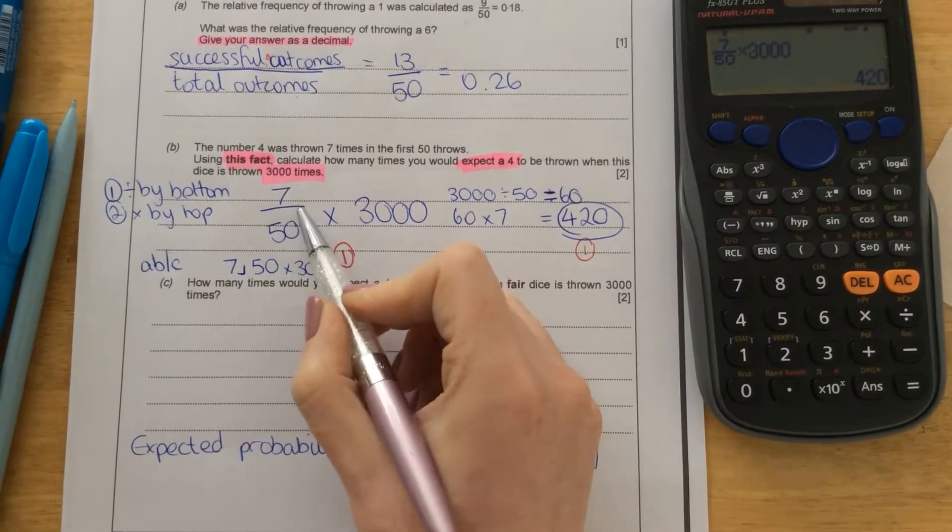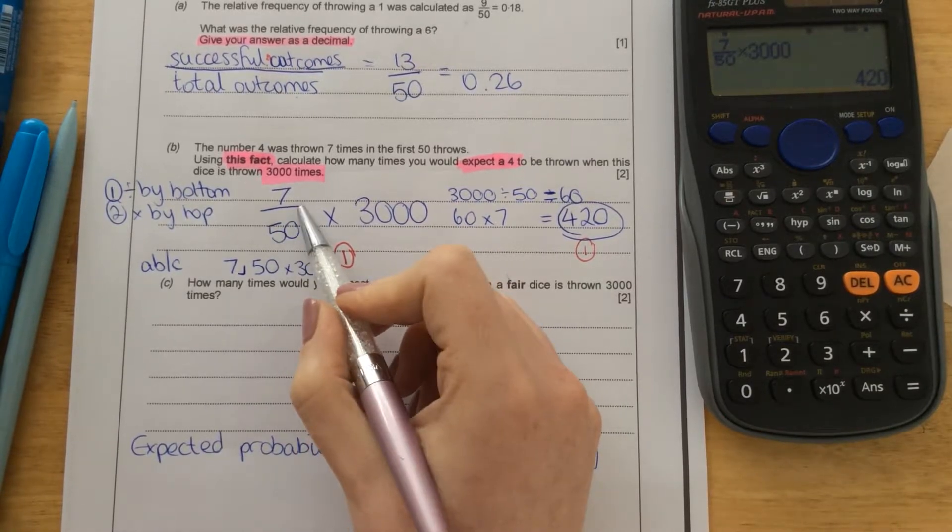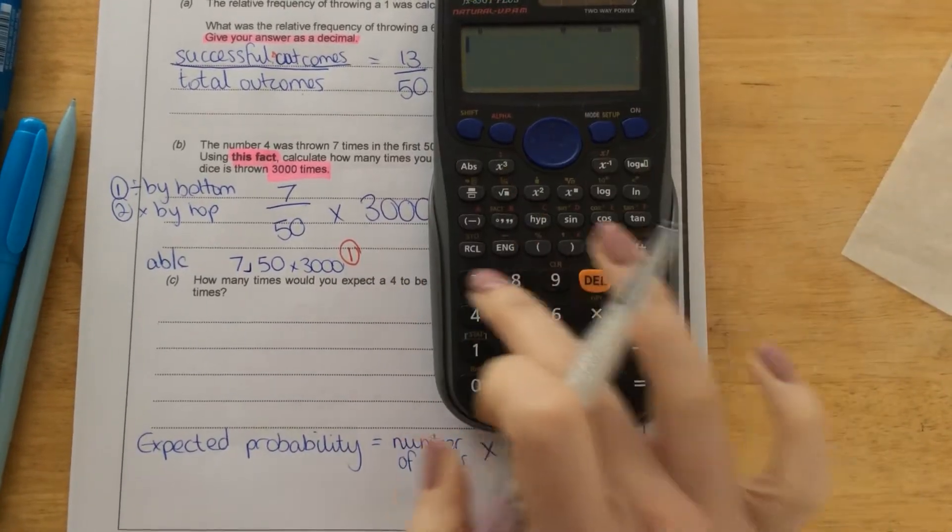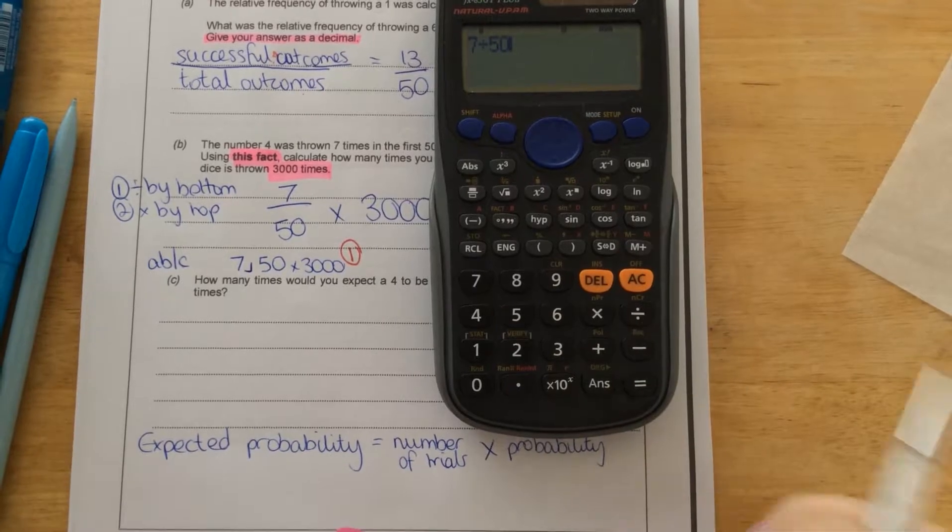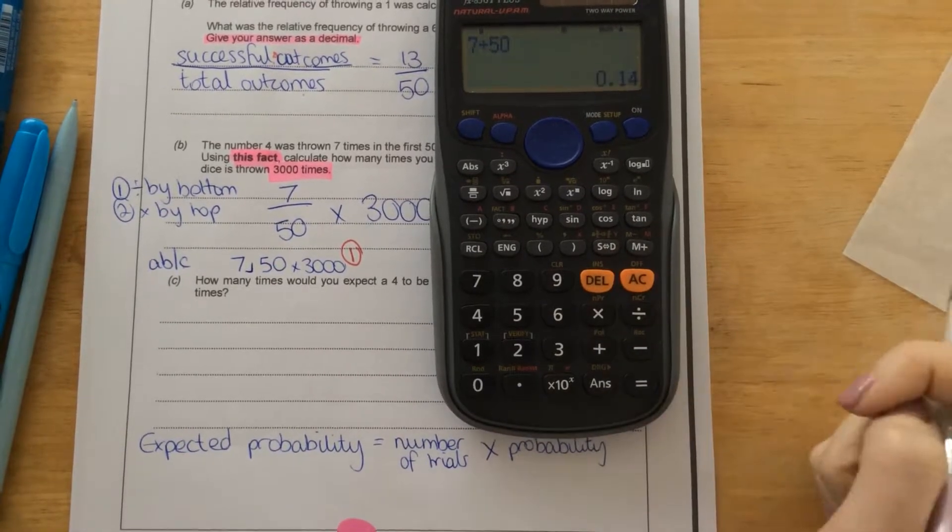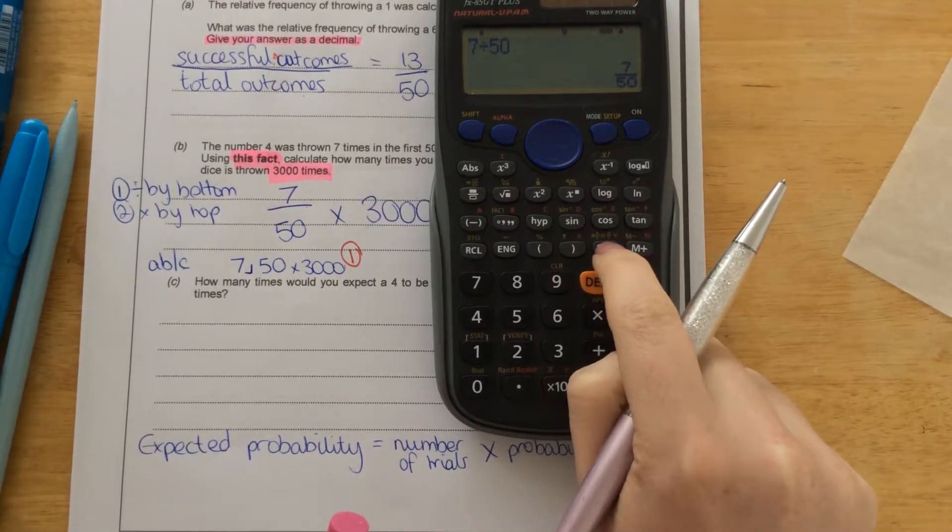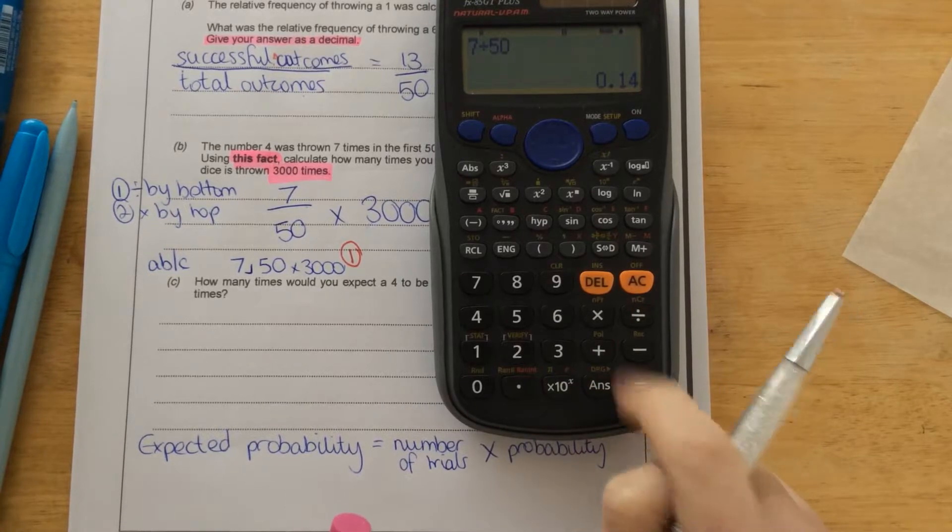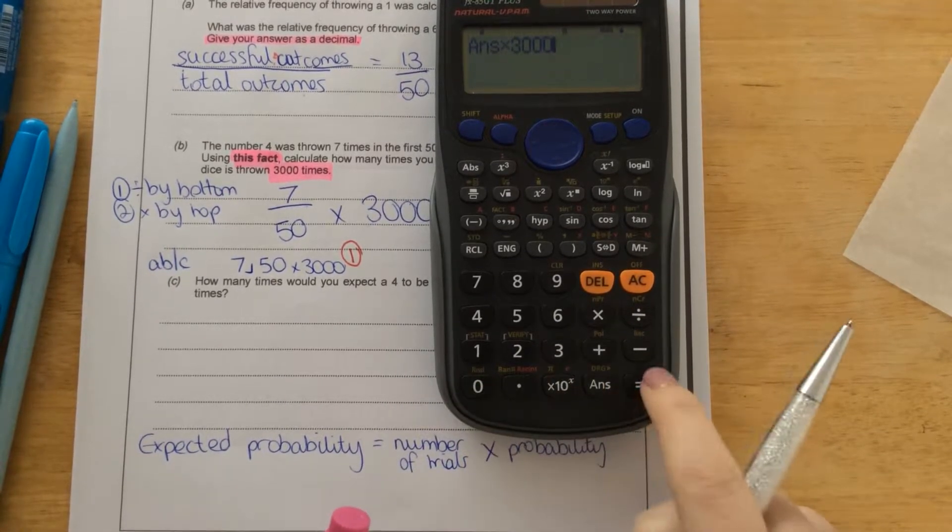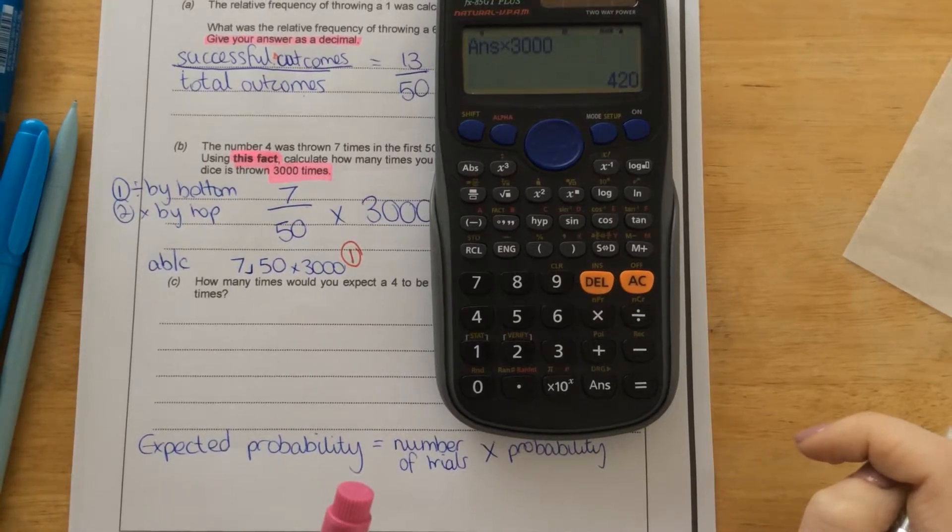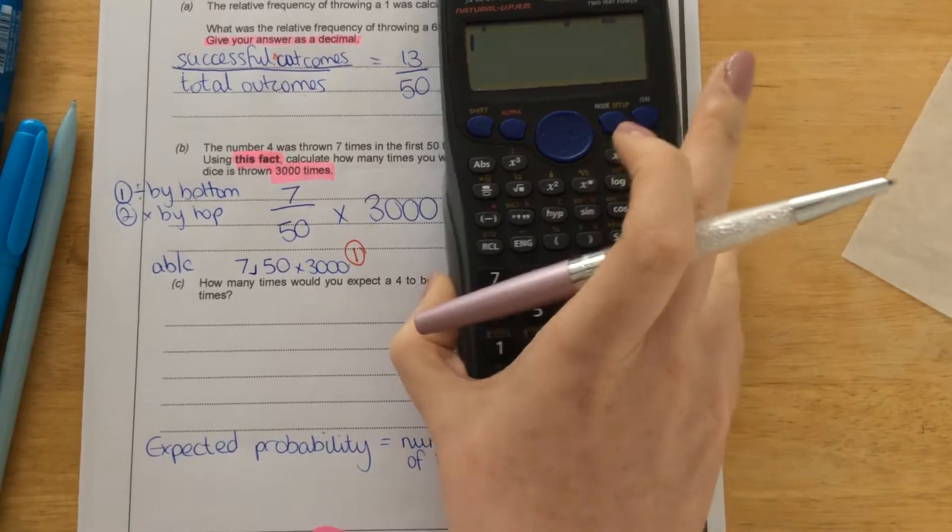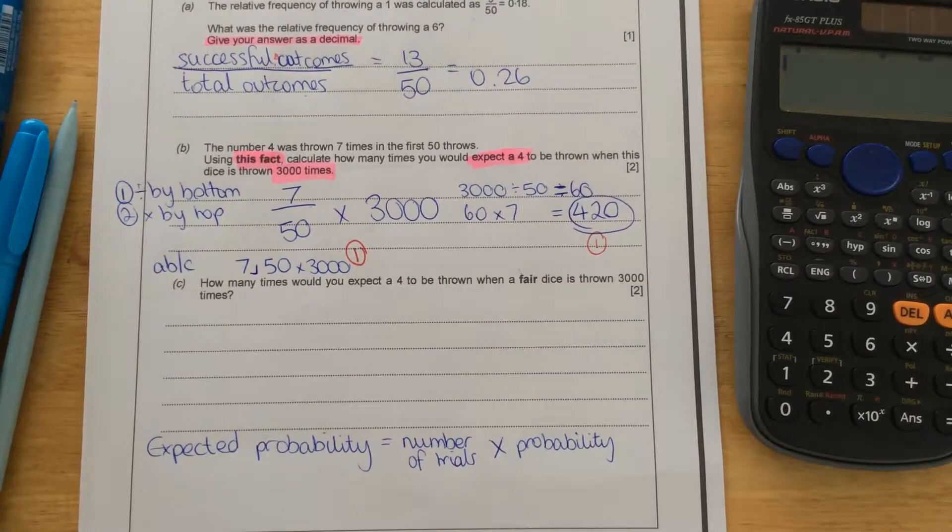You could also do 7 divided by, because the fraction line means divided by. So 7 divided by 50 equals, this button just changes it from a fraction to a decimal. And then times by 3,000. And that gives you the same answer as well. So three different methods you can use to work that out. Part C.